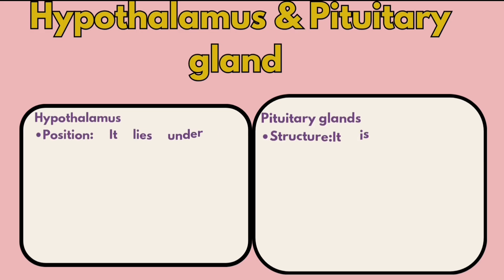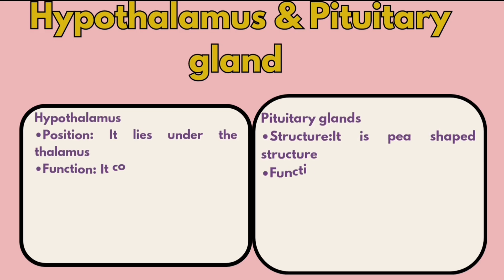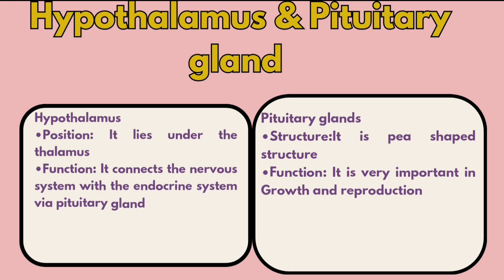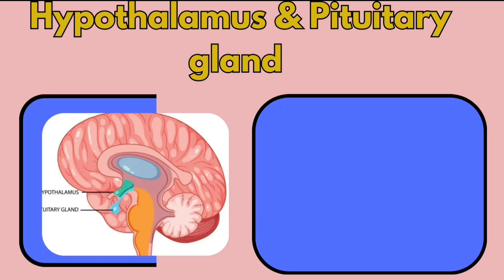The hypothalamus and pituitary gland: the pituitary gland is a pea-shaped structure, and its function is very important in growth and reproduction. The hypothalamus lies under the thalamus, and its function is to connect the nervous system with the endocrine system via the pituitary gland.